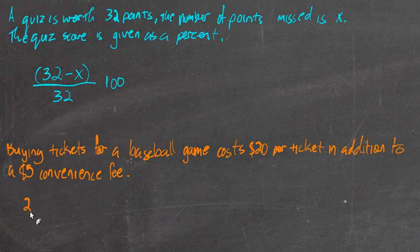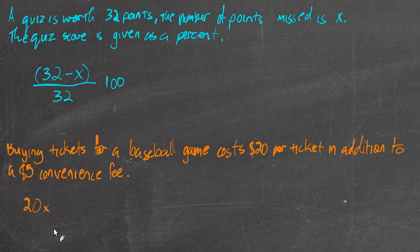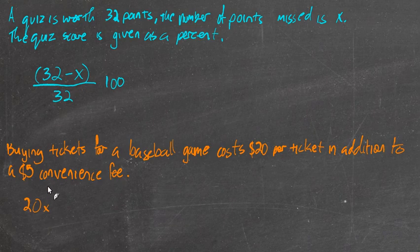We'll pay $20 per ticket, so we have to multiply by the number of tickets. 20x would represent that. If we plugged in the number of tickets, 20 times that number would be how much we spend on tickets, plus that $5 convenience fee. Well, that would be an expression.